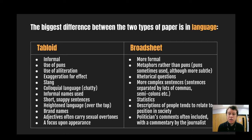Statistics will be used in sentences to support and further evidence the statements being made. Descriptions of people tend to relate to their positions in society, and political comments may be included with commentary from the journalist. So there are some clear differences simply when it comes to language use.